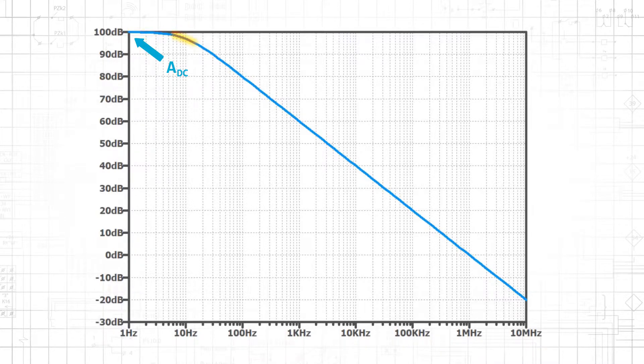As frequency increases, gain decreases, with a prominent transition from stable gain to decreasing gain occurring at the corner frequency, which in this case is 10 Hz.